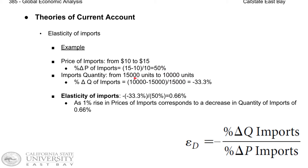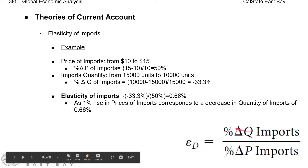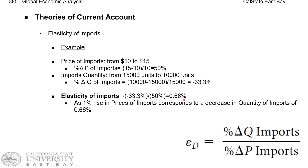Similarly, in terms of quantity, the United States used to buy 15,000 units, which dropped to 10,000 units after the price increase. So the change in quantity is 10,000 minus 15,000, which is negative 5,000. Divided by the original quantity of 15,000 gives us the percentage change in quantity, which is negative 33%. Having both percentage changes, we can calculate the elasticity, which is 33% divided by 50%, giving an elasticity of 0.66.